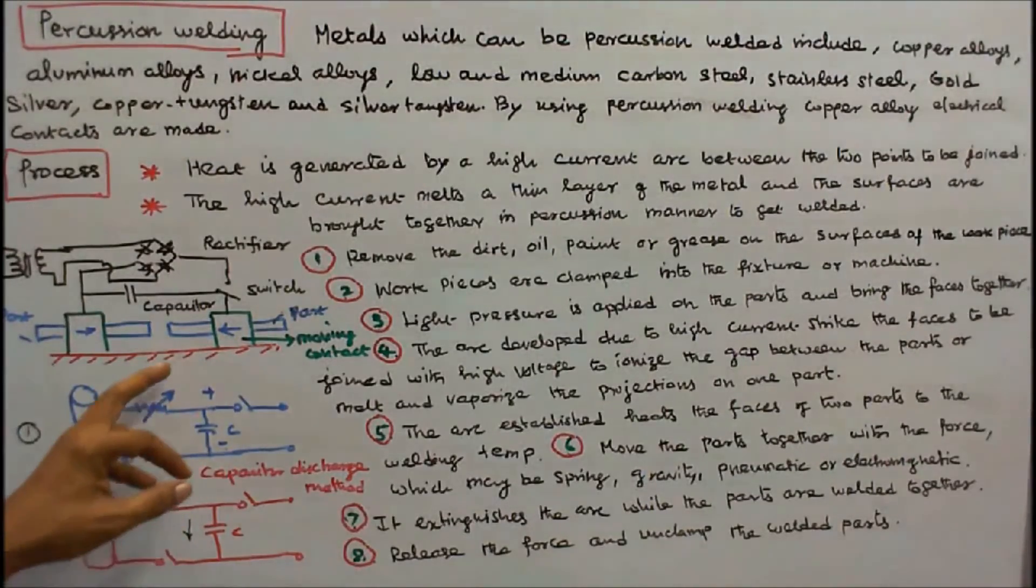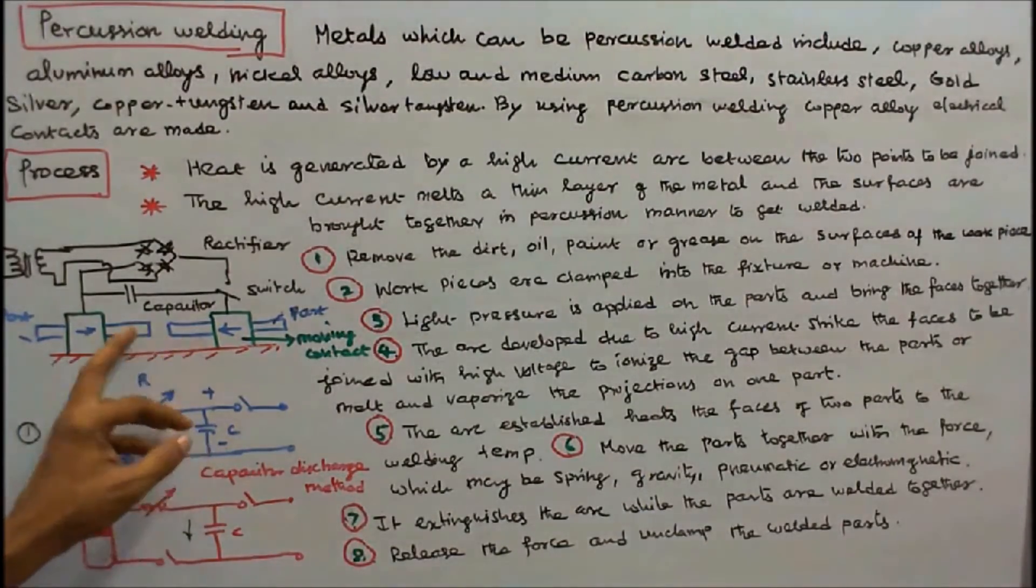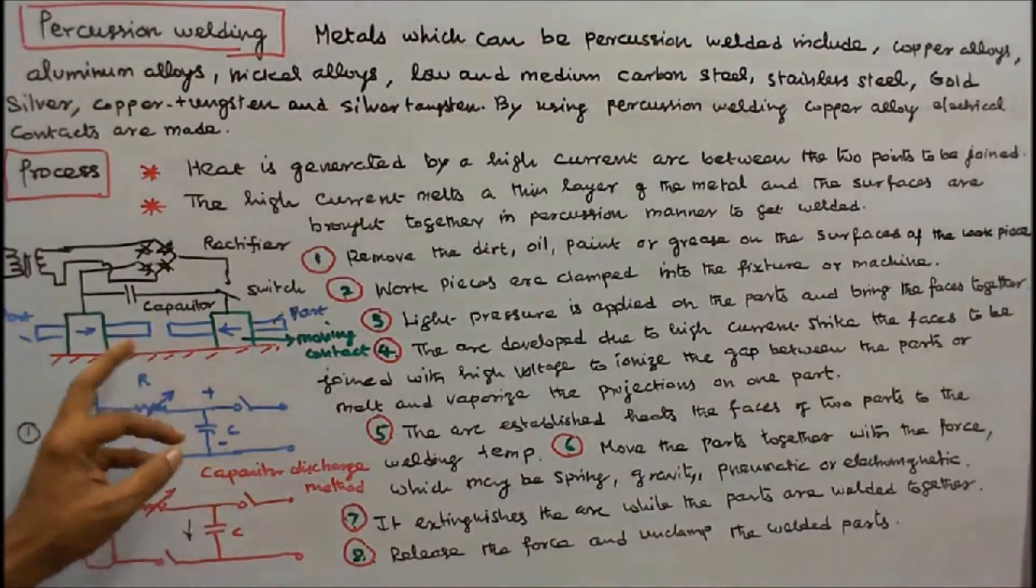Number five: the arc established heats the faces of two parts to the welding temperature. Number six: move the parts together with the force. The force may be spring, gravity, pneumatic or electromagnetic.